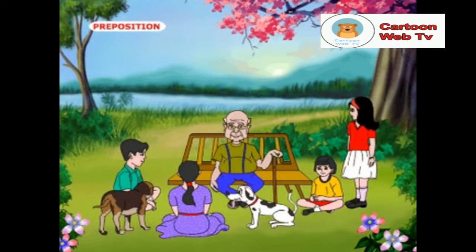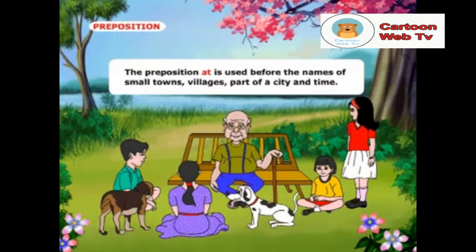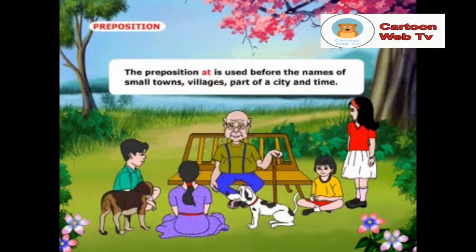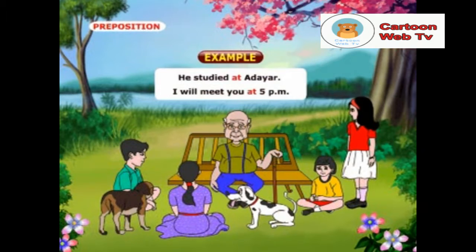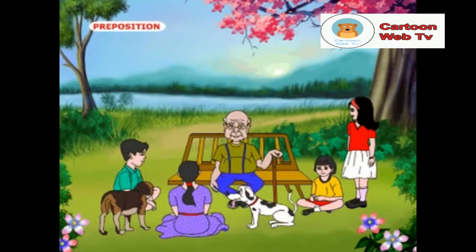Let me tell about the preposition at, Grandpa. The preposition at is used before the names of small towns, villages, parts of a city and time. Examples: He studied at Adayar. I will meet you at 5 p.m.